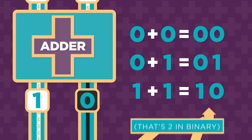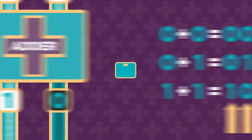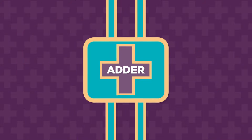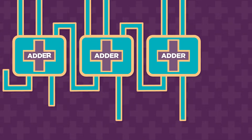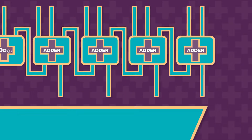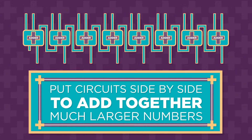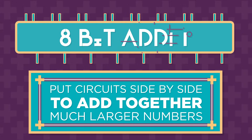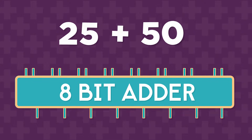You need two wires coming out because it can take up to two binary digits to represent the sum. Once you have a single adder for adding two bits of information, you can put together multiples of these adder circuits side by side to add together much larger numbers. For example, here's how an 8-bit adder adds the numbers 25 and 50.